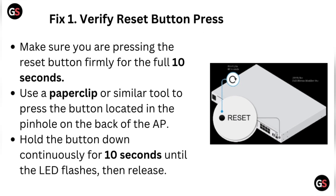Fix one: Verify reset button press. Make sure you are pressing the reset button firmly for the full 10 seconds. Use a paper clip or a similar tool to press the button located in the pinhole on the back of the AP. Hold the button down continuously for 10 seconds until the LED flashes, then release.